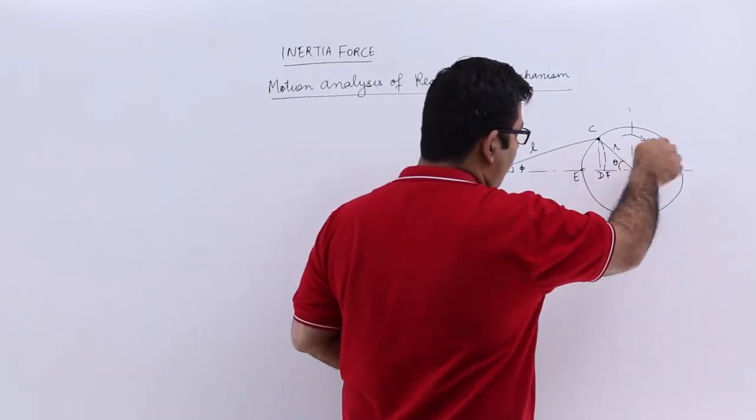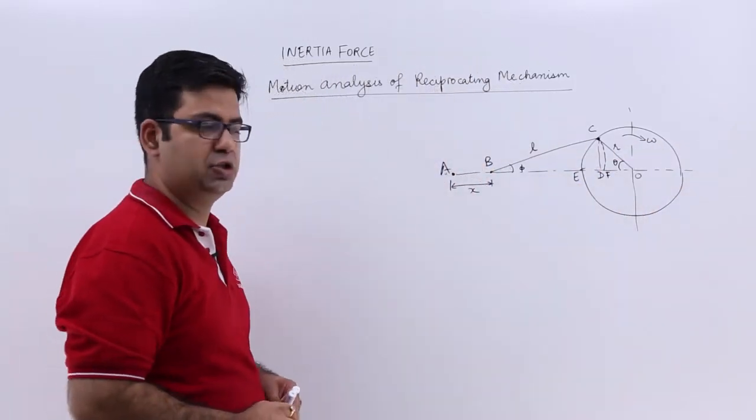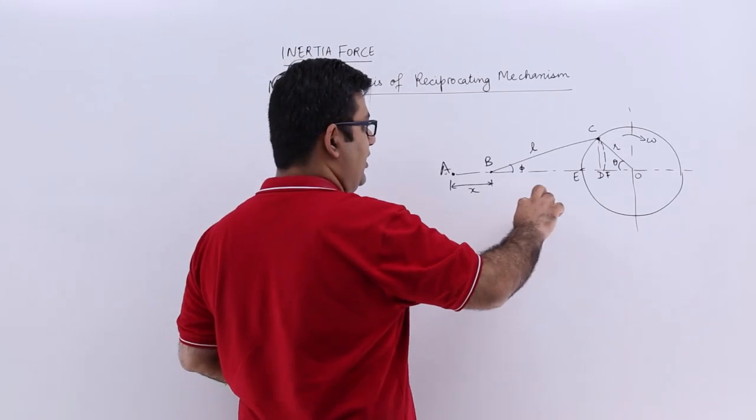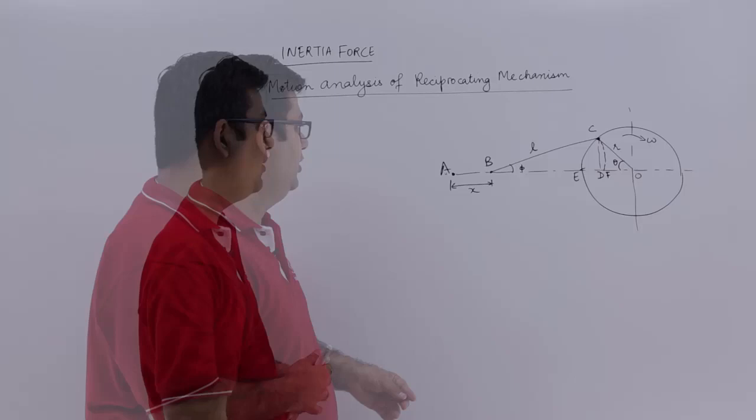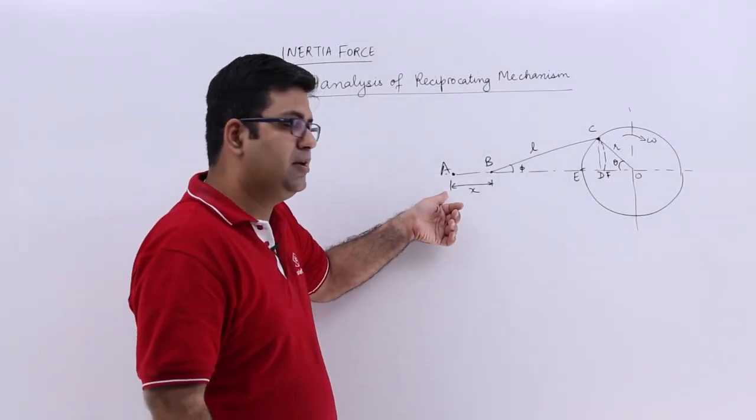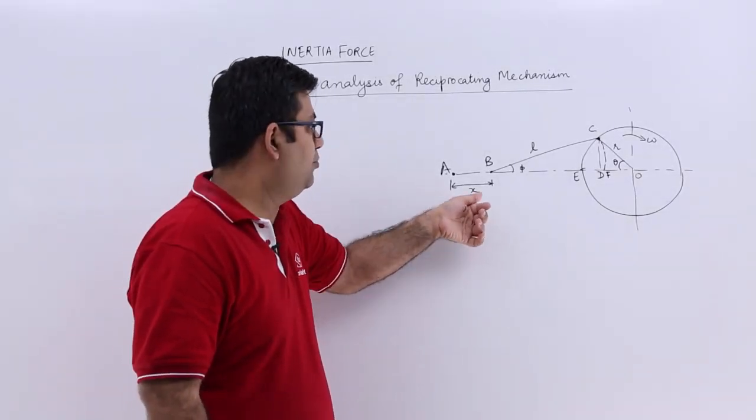The crank is rotating in a clockwise direction. So what happens is the crank rotation from OE to OC by an angle of theta makes piston pin move from point A to point B.